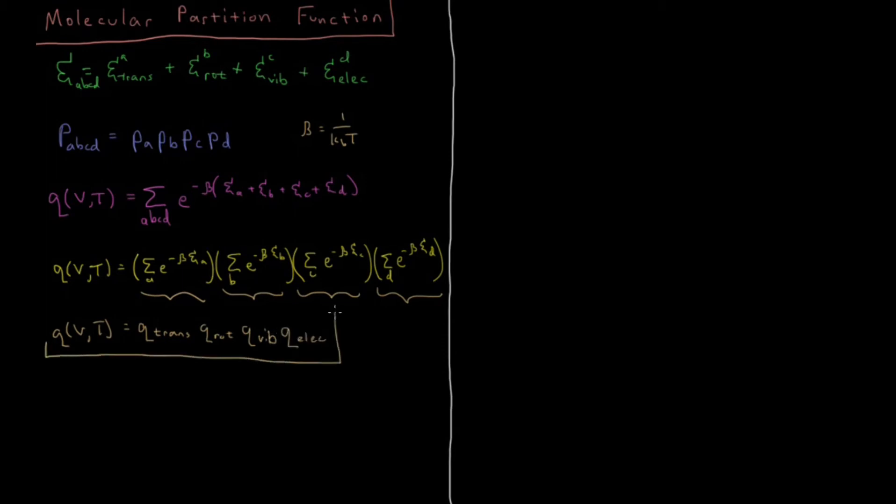So, for our molecular partition function, it is a product of our translational, rotational, vibrational, and electronic partition functions. And we can go about finding each of these four individual pieces by themselves and then taking the result of those four calculations, multiplying them back together at the end, and we have our desired total partition function q there.